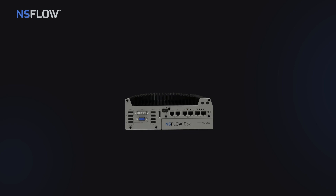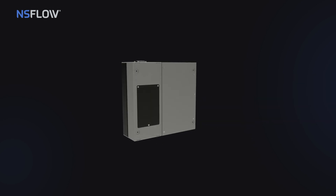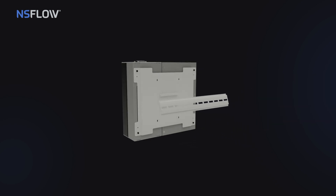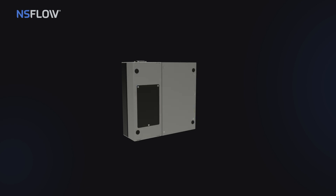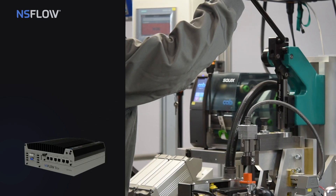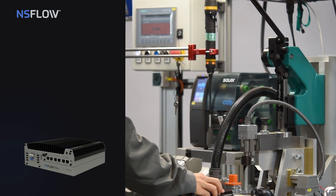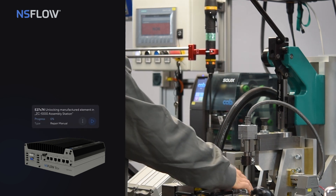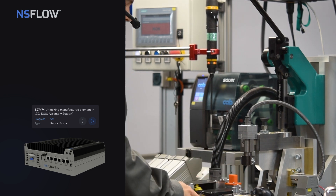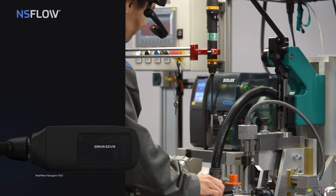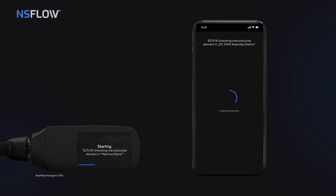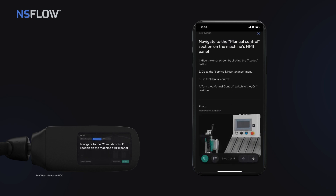NS-Flow Box can be connected to a machine controller. It can be mounted on a DIN rail and be closed in the machine's switchgear as its module. If a failure occurs, the error code generated by the machine is automatically sent to NS-Flow Box, which matches it with the appropriate repair manual. A message with the repair manual is sent to the machine operator on the device they are using — smartphone, tablet, or AR glasses.